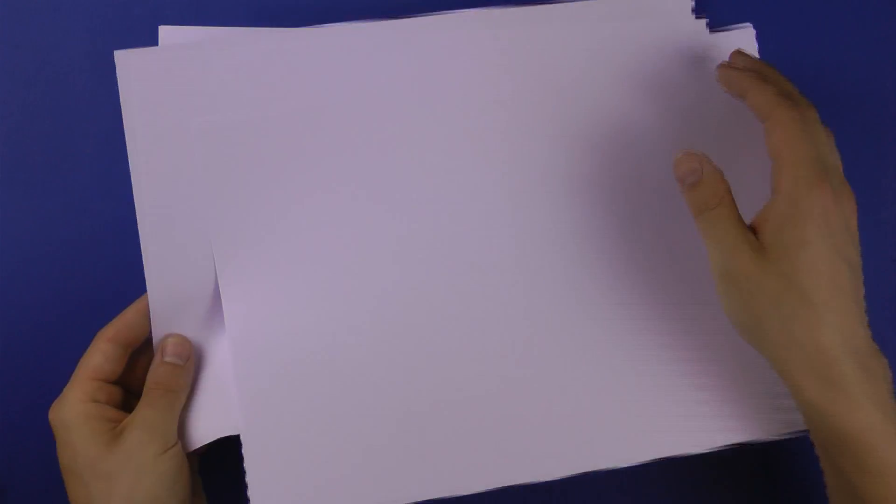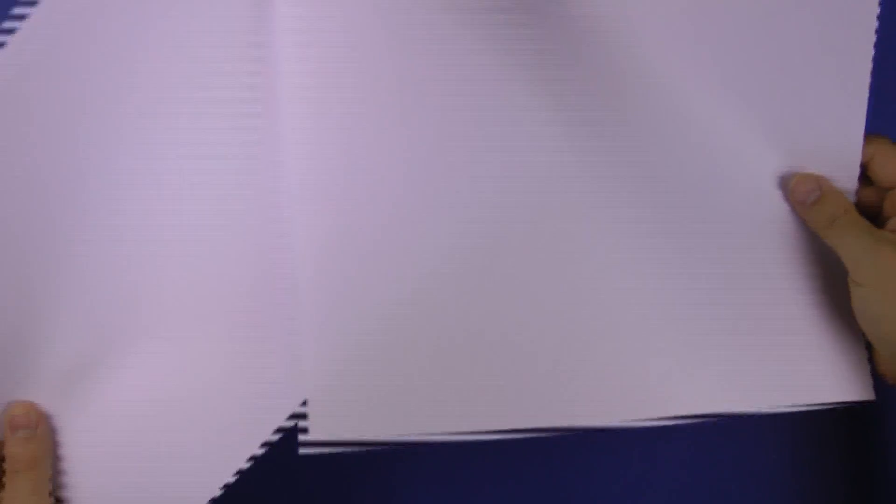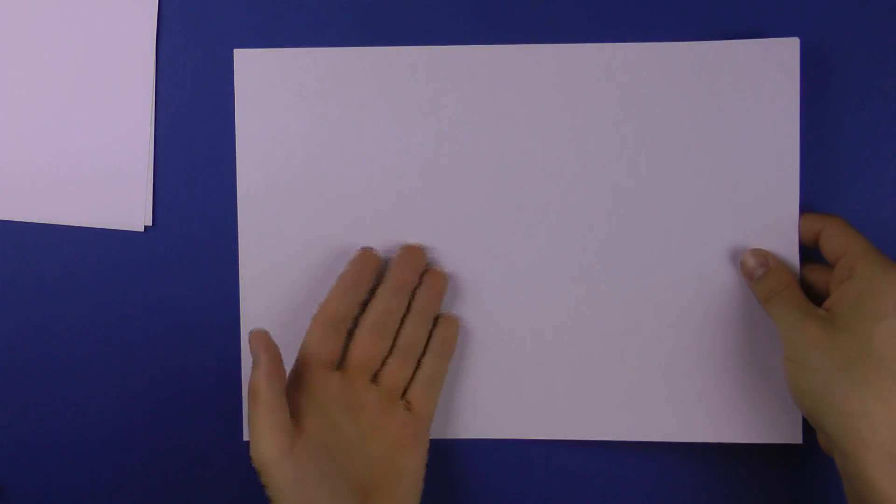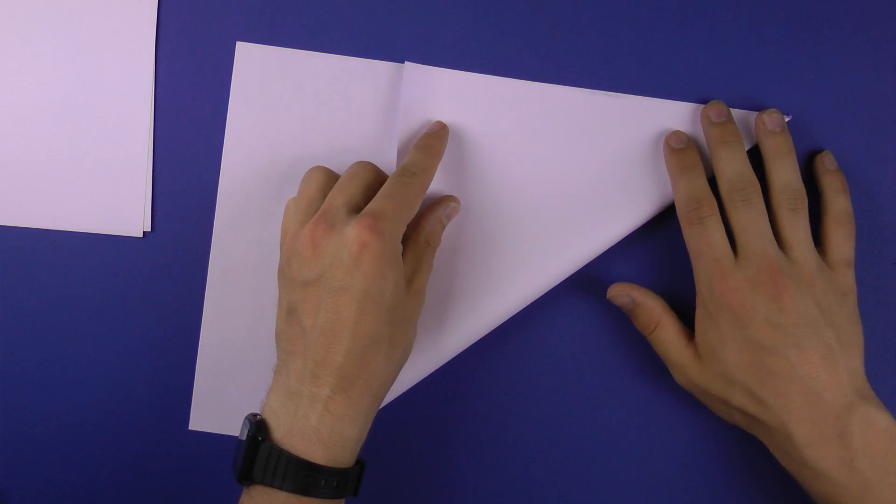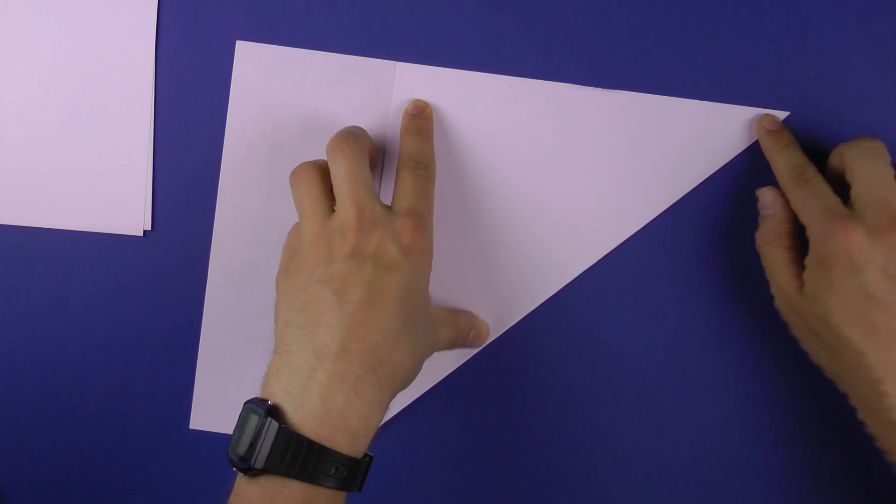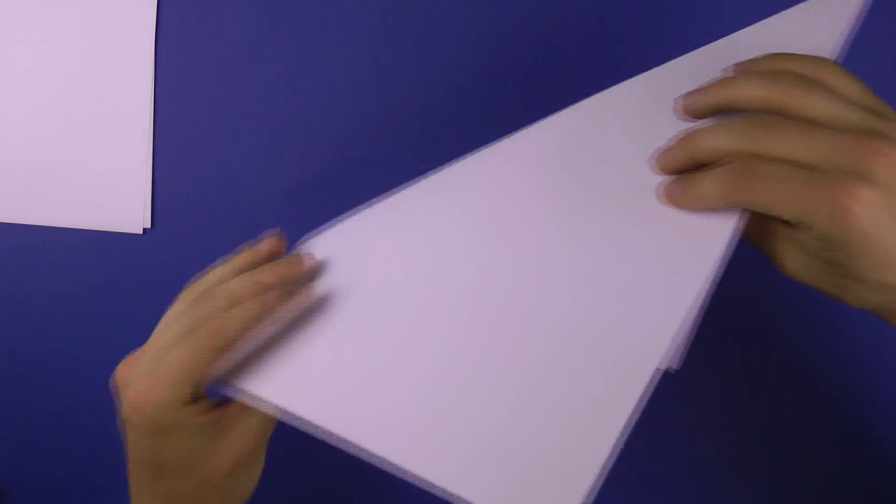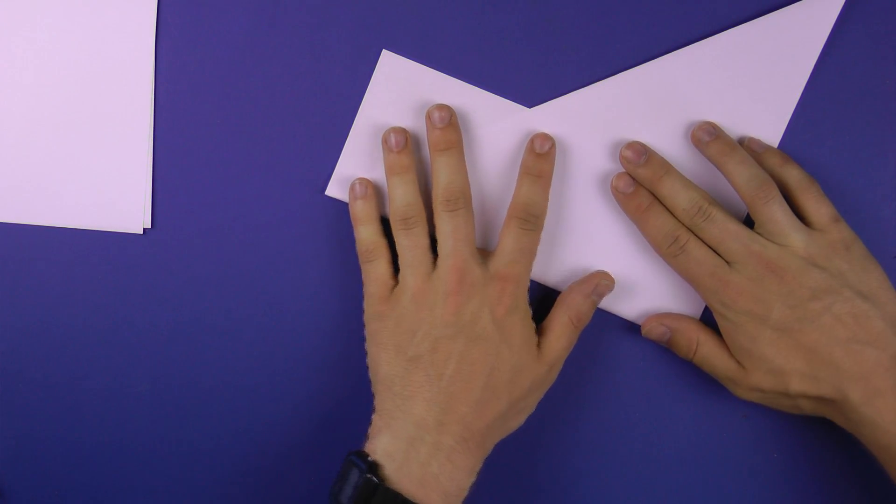And the only thing you need to do is to make it into a square and there are several ways but the simplest one I discovered was folding it diagonally like this. So this edge touches this edge and then fold here.